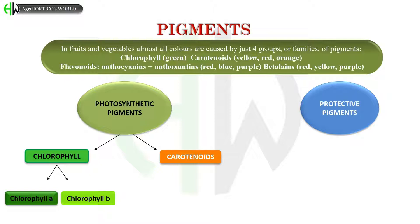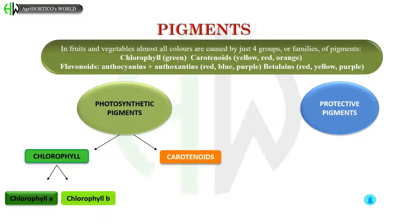The chemical formula of chlorophyll A is C55 H72 N4 O5 Mg. Chlorophyll B helps in photosynthesis by absorbing light energy. It is more soluble than chlorophyll A in polar solvents because of its carbonyl group. Its color is green and it primarily absorbs blue light. The chemical formula of chlorophyll B is C55 H70 N4 O6 Mg.